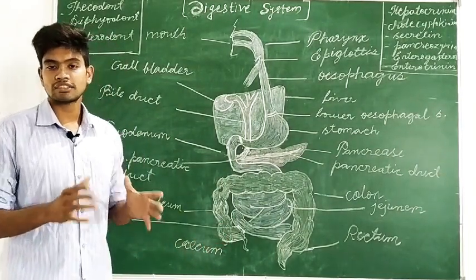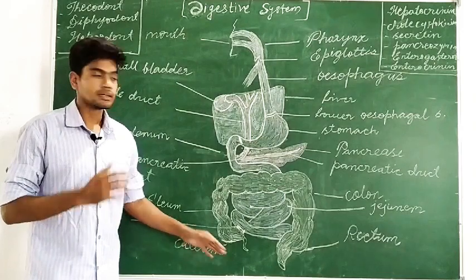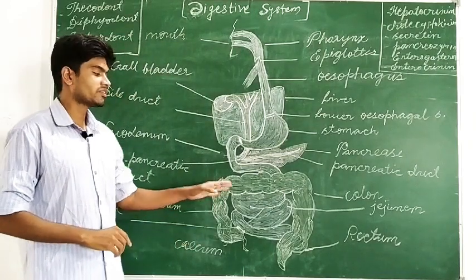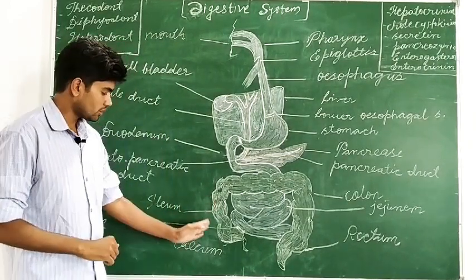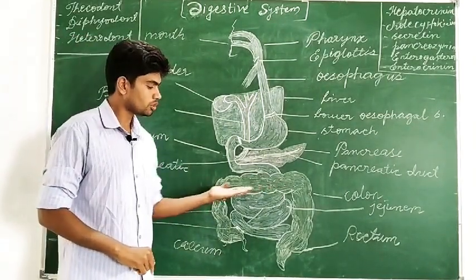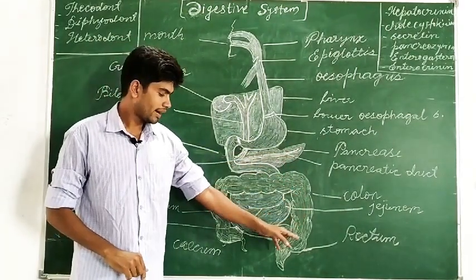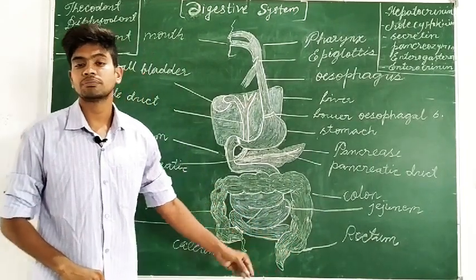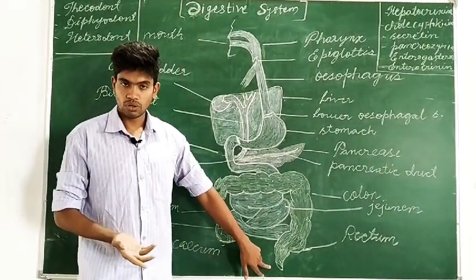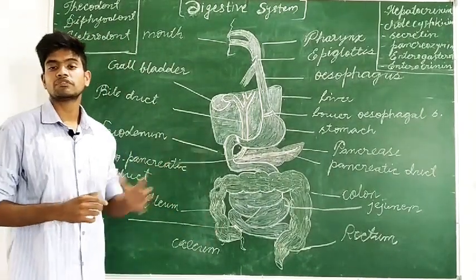In the case of the large intestine, we can classify it into three parts. The first one is called the cecum, the second is called the colon, and the third is called the rectum. The colon itself can be divided into three distinct parts: the ascending colon, the transverse colon, and the descending colon. The colon ends and the rectum starts, and at the end of the rectum there is a hole through which we expel all the undigested food — this is called the anus. Now let's see how the process of digestion takes place.